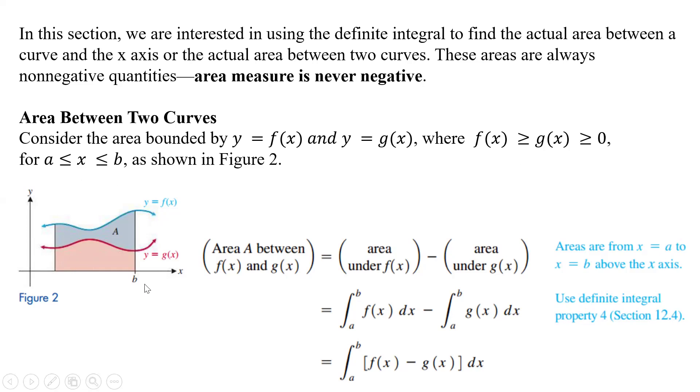We're going from some a over here to some b over here. Again, we're looking where this one's bigger than this one and it's bigger than zero. The area between the two is basically the area under f(x), which is the blue all the way to the thing, minus the area under g(x), which is the peach color here. So we take the whole thing minus the peach and we get the blue.